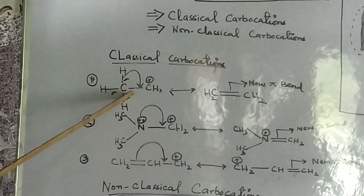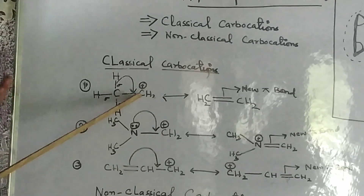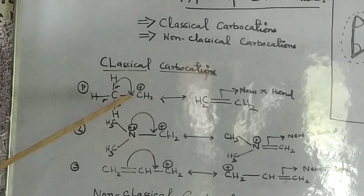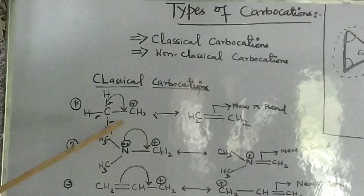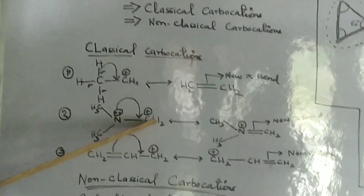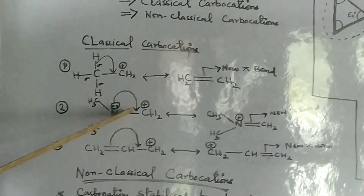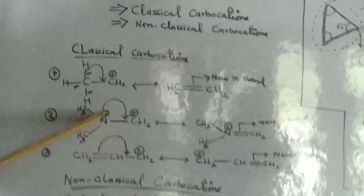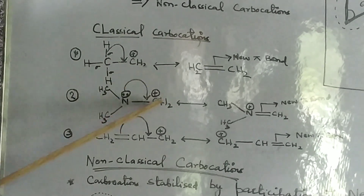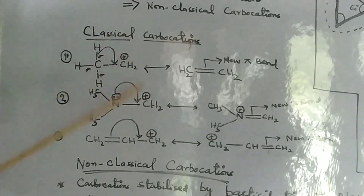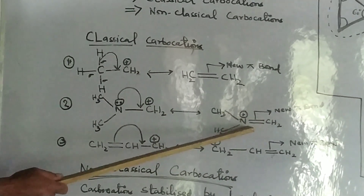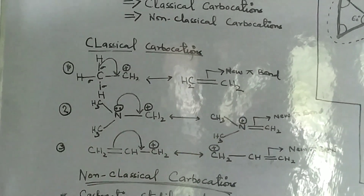In the first case, the carbocation, which was a carbon with positive charge, was stabilized by sigma electrons from the adjacent position. In the second example, CH2+ is the carbon with the positive charge, and the adjacent group is nitrogen, which has a lone pair of electrons. The lone pair of electrons from nitrogen stabilizes the positive charge, and again you will see the formation of a new pi bond.